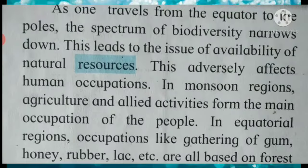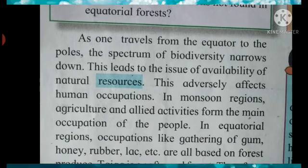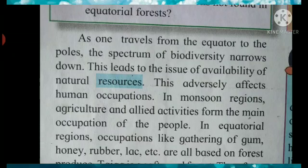Children, as you know, the sun rays are perpendicular to the equator, and there are two poles — north and south pole. As one travels from the equator to the poles, the spectrum — now the word spectrum means distribution or frequency — the distribution of biodiversity narrows down, or in other words, it reduces. And as it reduces, it leads to the issue of availability of natural resources. As these natural resources are reduced, it leads to adverse — the word adverse means negative — effects on human occupations.